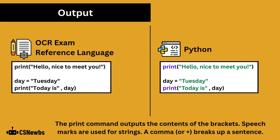The print command outputs the contents of the brackets. Speech marks are used for strings. A comma or a plus sign breaks up a sentence. A comma adds a space between parts of a sentence when printed, and the plus sign does not. Using a plus sign is called concatenation. See the string handling video for more information about this.